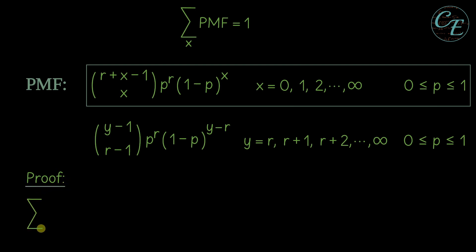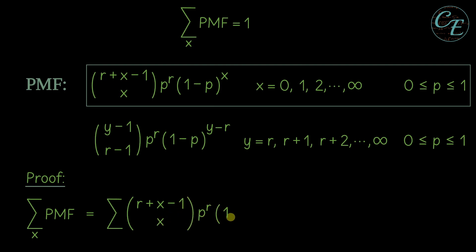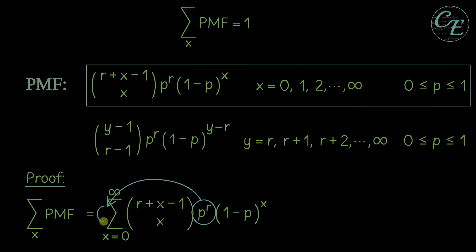In our proof, we will determine the value of the PMF at its support and we should prove that it is equal to 1. We will prove based on this PMF first. So let us substitute it in here. So it is equal to the summation of that PMF, and for its support, which is from 0 to infinity. So we have x equals 0 until infinity. Now this P raised to R has no X in it, so it is unaffected by this summation. So we can consider this as a constant and move it outside of this summation.